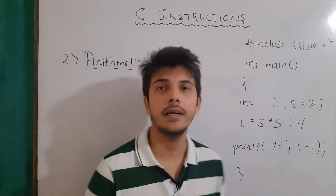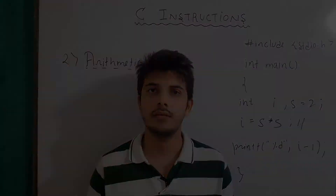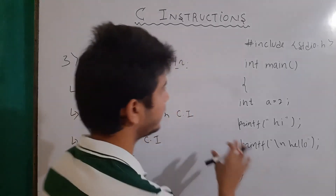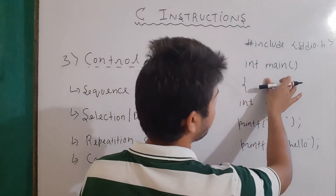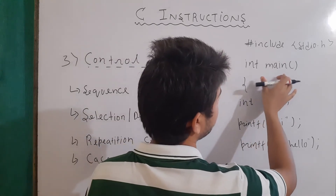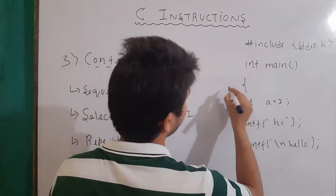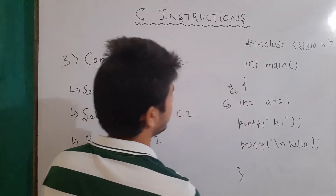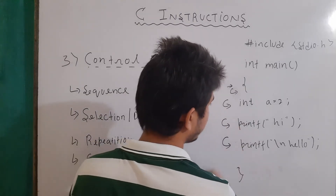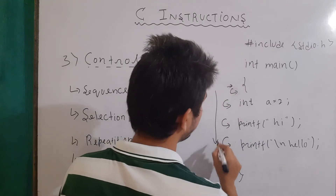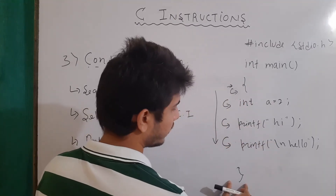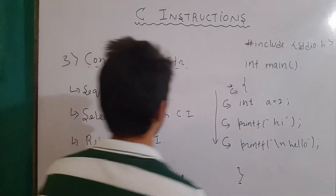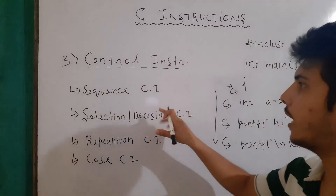Now let's talk about control instructions. Control instructions basically determine the flow of control in a program. For example, our control first goes into the main function — program execution starts from main. Then each line executes in order: control goes here, then here, then here, moving from top to bottom. After that, the control reaches the closing curly brace and the program execution terminates.